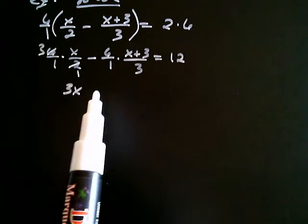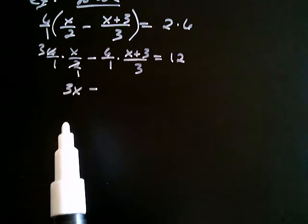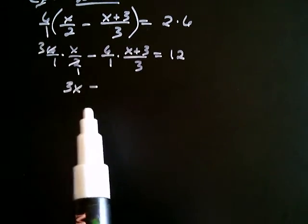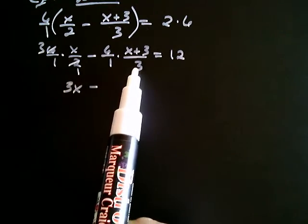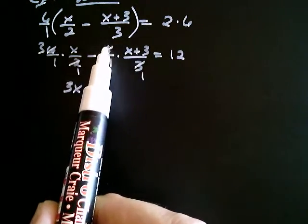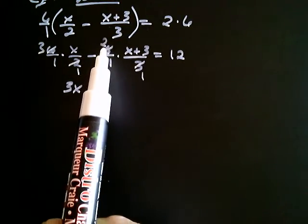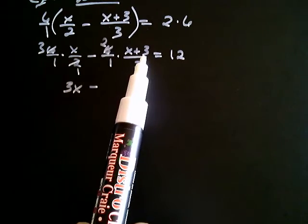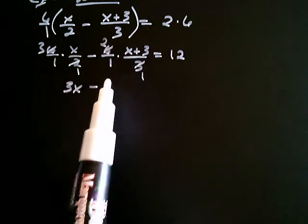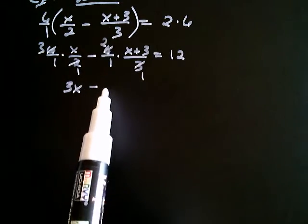For the first term, 2 goes into 2 once, 2 goes into 6 three times, and 3 times x is 3x. And now the fun part. We still have minus, right? Minus what? Well let's see. Minus whatever we get when we multiply these together. 3 goes into 3 once, 3 goes into 6 two times. And now I still have, right here, 2 multiplied by x plus 3. Now this is a product, and so what we can think of is the negative is belonging with the 2. So we can think of it with a minus 2.